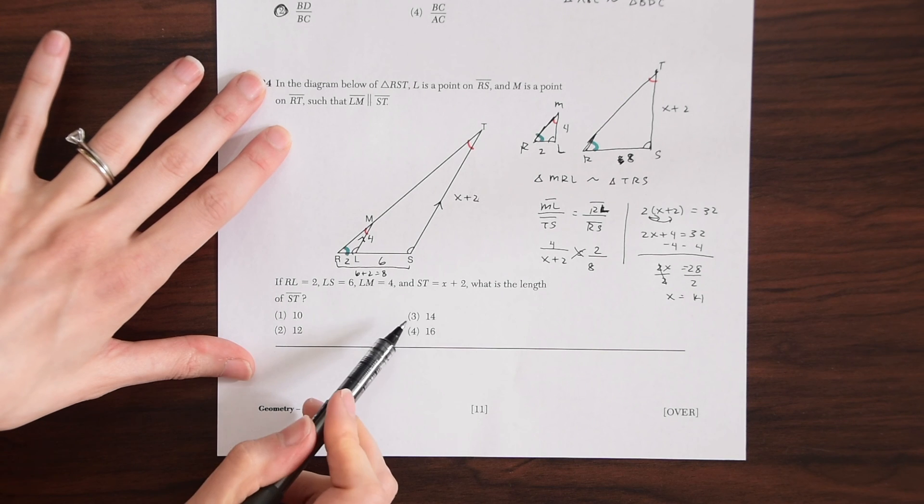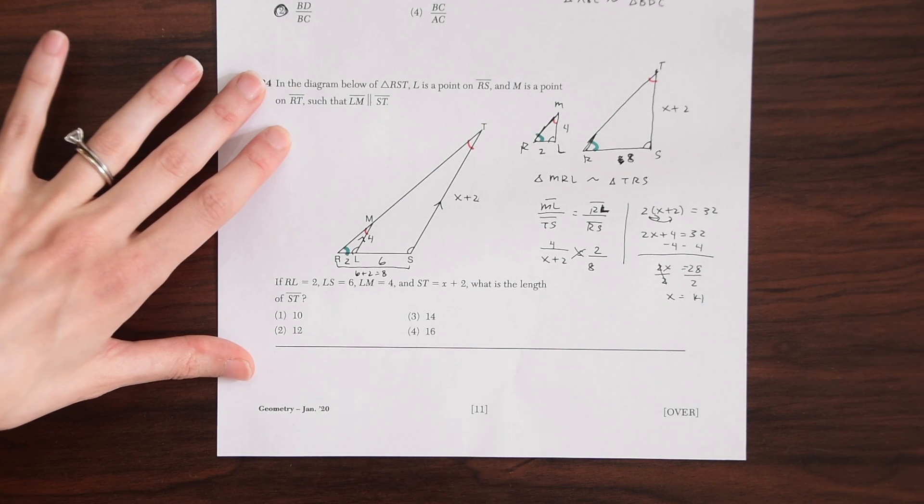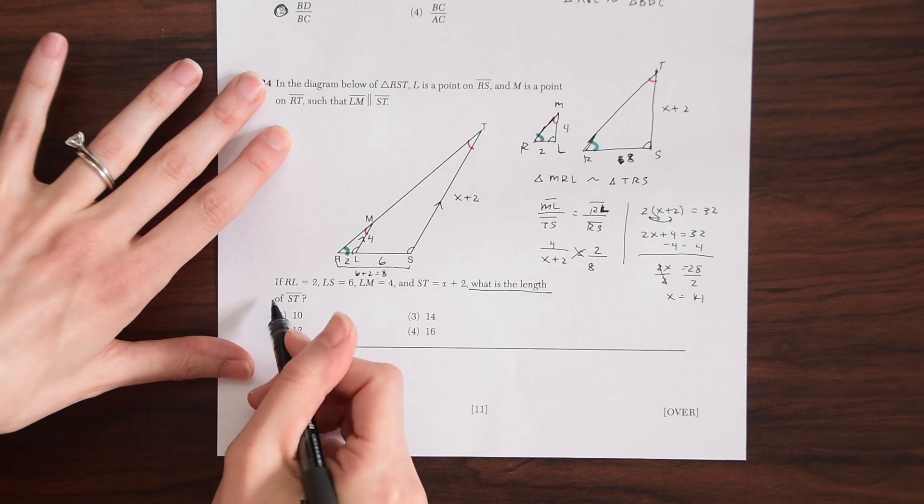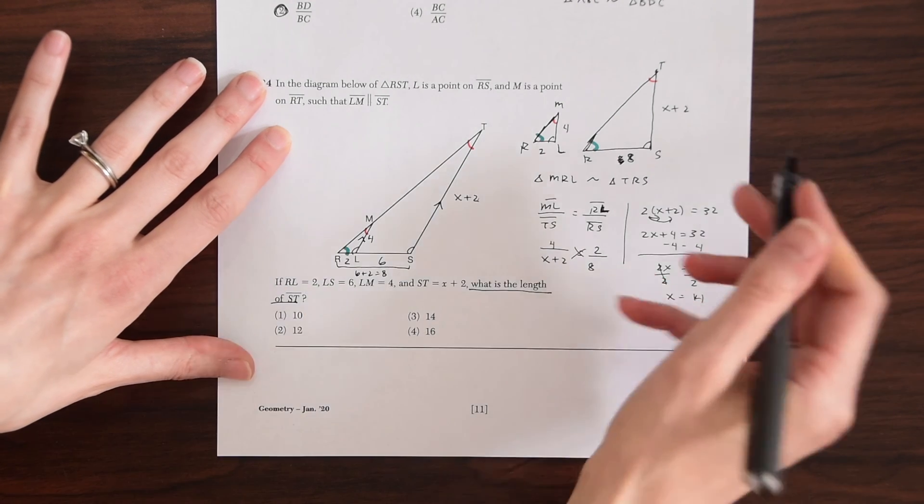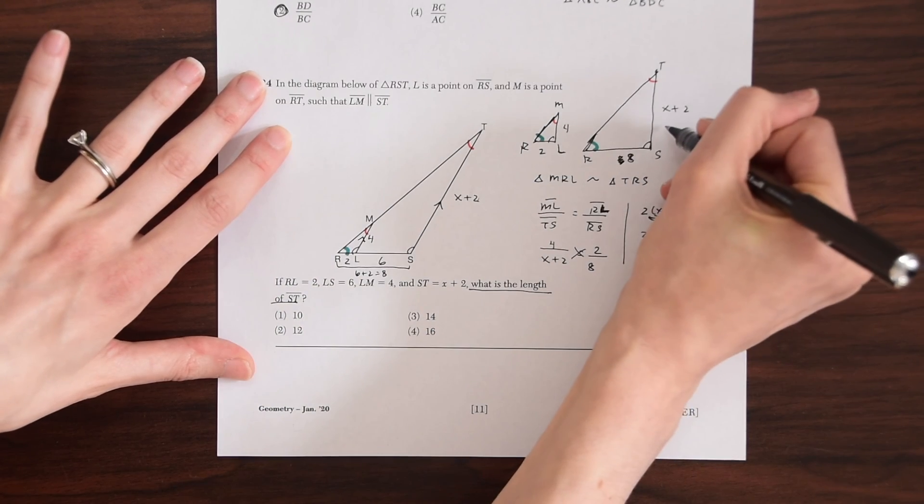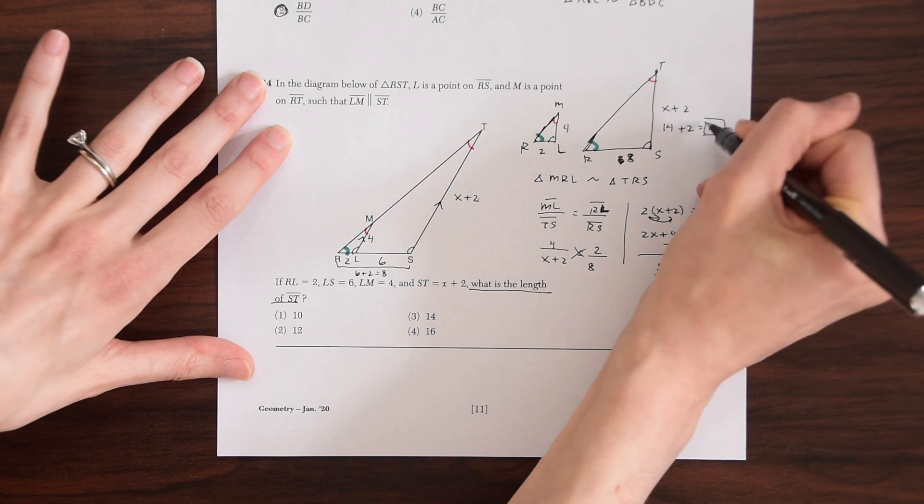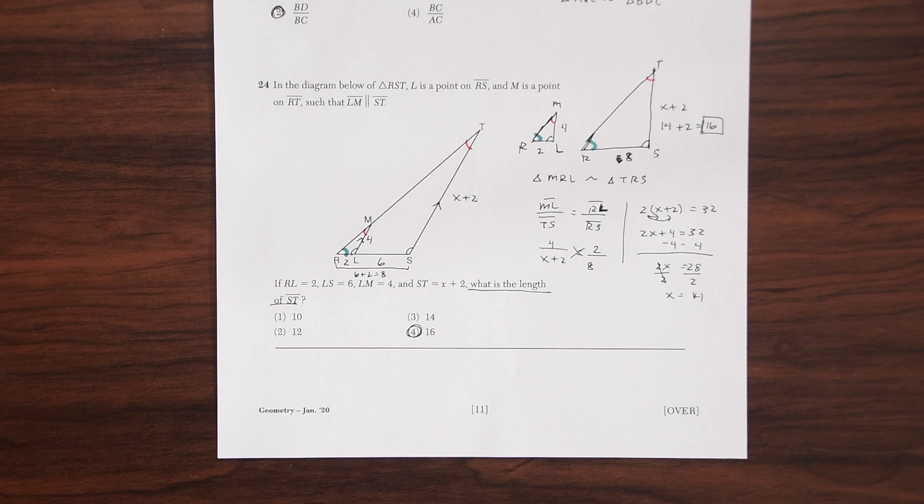So we have this value of 14 right here, but that's not our answer, right? Because remember when we go back and look at what the question is asking, they want to know what is the length of ST. So the length of ST is not 14, that's the value of X. So we just need to go back and plug 14 into X and then we'll get the length we want, which is 16. Choice 4. And that's our answer.